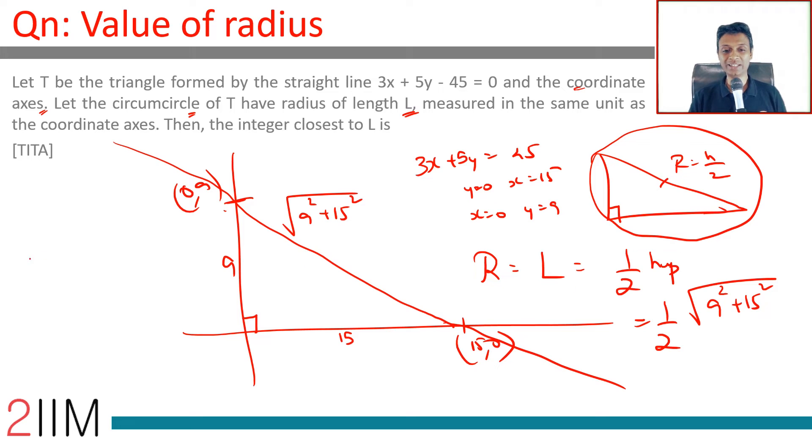So we need to find 9 squared plus 15 squared. We can take 3 squared outside: 3 squared plus 5 squared. So it is 3 by 2 times square root of 9 plus 25. 3 by 2 times square root of 34. 1 and a half times square root of 34.